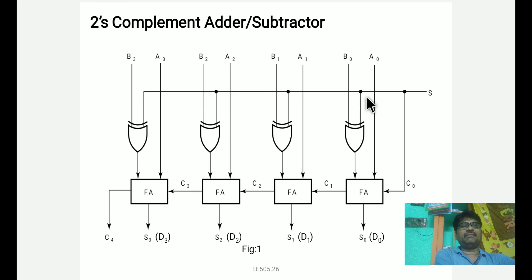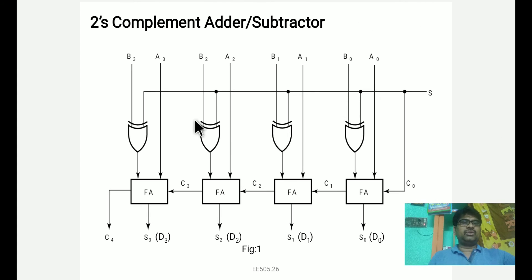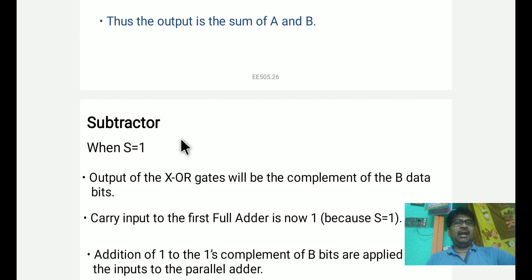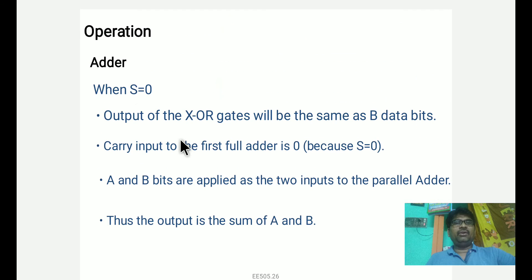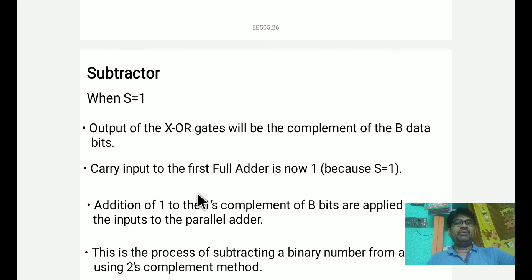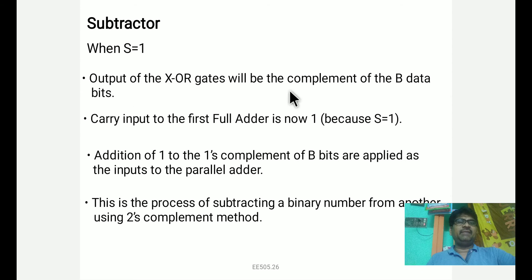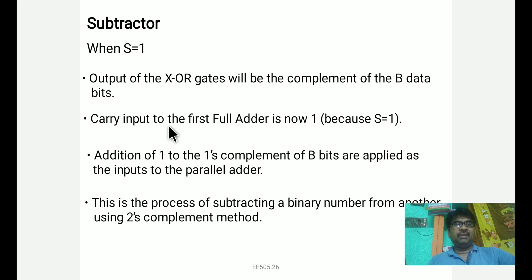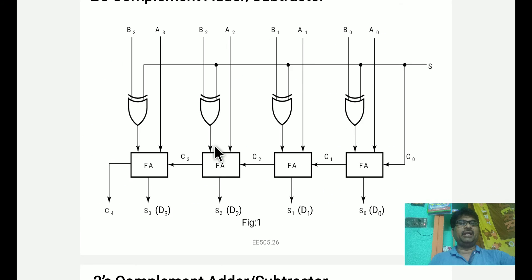With S equal to 1, the output of the XOR gate is the complemented data of the B bits. When S is equal to 1, the XOR gate complements each B input. So any B value input through the XOR gate with S=1 gives the one's complement of B.